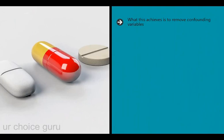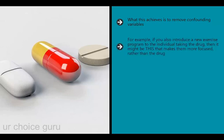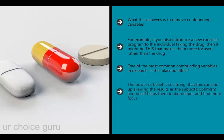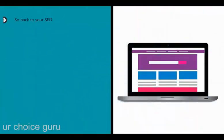A confounding variable is anything that can skew your results. For example, if you introduce a new exercise program to the individual taking the drug, it might be the exercise rather than the drug that improves focus. One of the most common confounding variables in research is the placebo effect - when you tell someone they're receiving a drug, they feel better even if it's just a sugar pill. That's why the experimental group often receives a sugar pill: both groups think they're getting something, ruling out the role of placebo in the study.